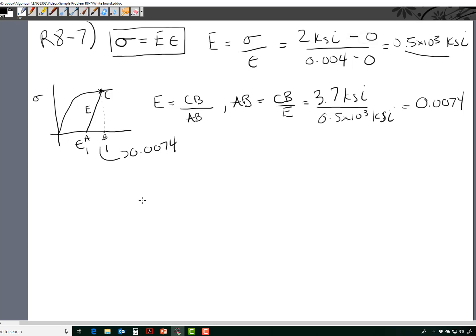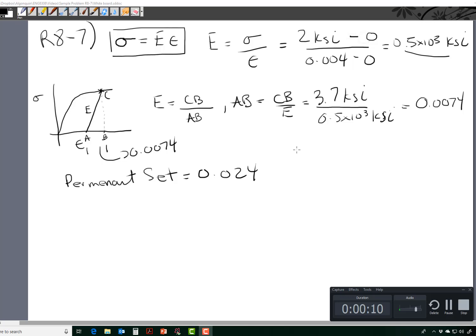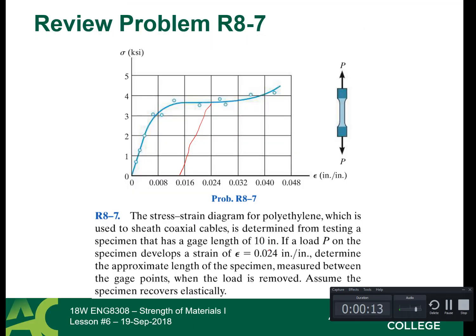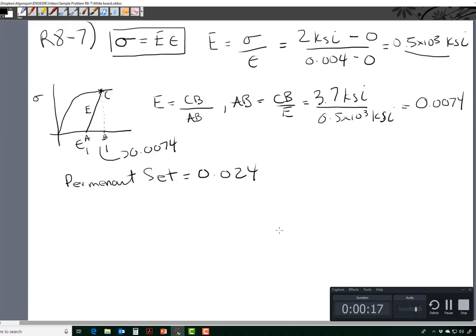So the next question is really what is the permanent set? The permanent set is equal to the strain when it was released, which is 0.024, subtract 0.0074, and what does that equal? 0.0166.